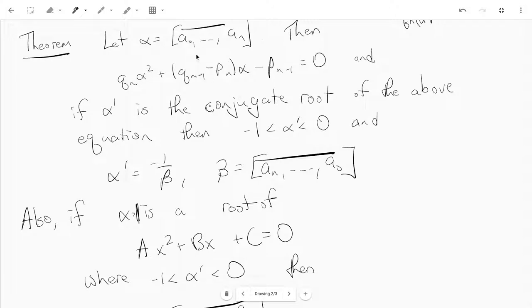that we have a repeating or periodic continued fraction alpha, then it's the root of a quadratic polynomial, and if alpha dash is the other root of the polynomial, then it lies between negative 1 and zero